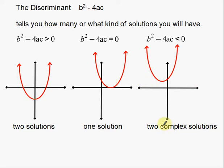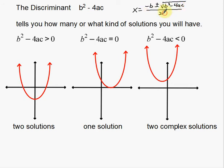Sometimes you can have complex solutions — imaginary solutions — where the parabola itself will not cross the x-axis. That's kind of what the discriminant is. Your quadratic formula is x equals negative b plus or minus the square root of b squared minus 4ac, all over 2a. The discriminant is just the b squared minus 4ac — that little piece is the only part you need to determine what your parabola looks like and how many solutions you'll have.